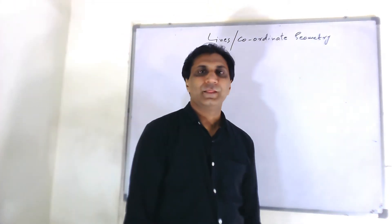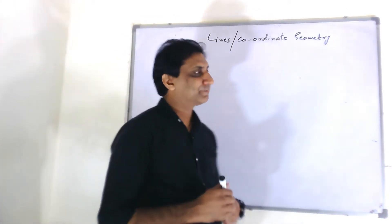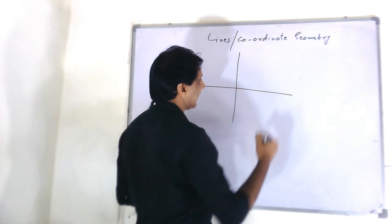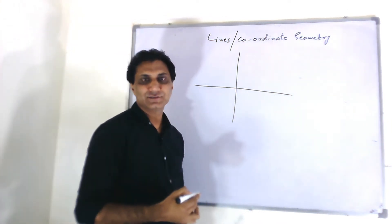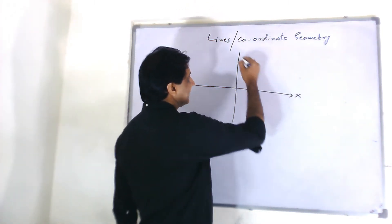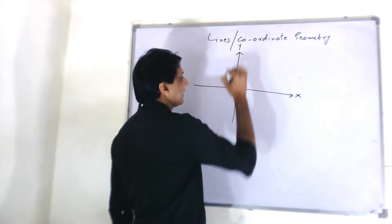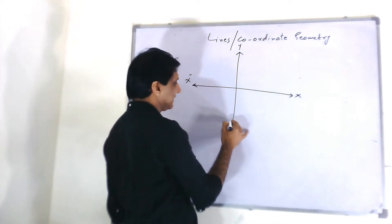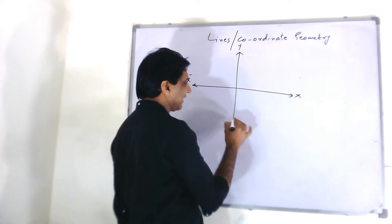Hello, Coordinate Geometry and Lines. This is an xy plane or Cartesian coordinate system. These are x coordinates and these are y coordinates. These are negative x coordinates and these are negative y.